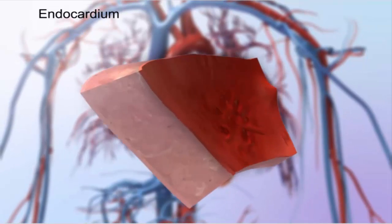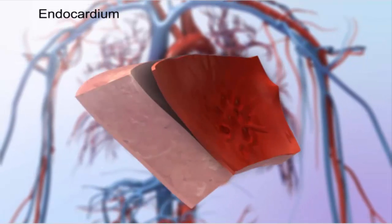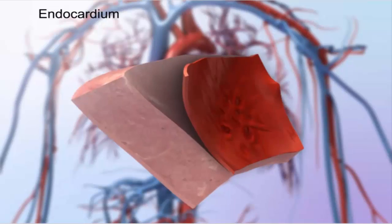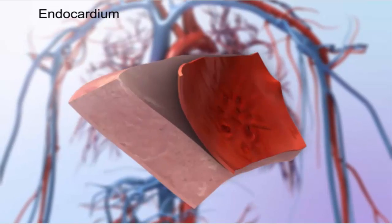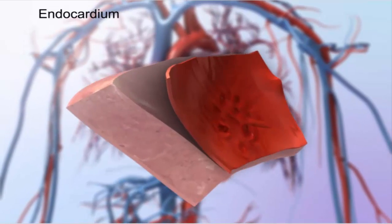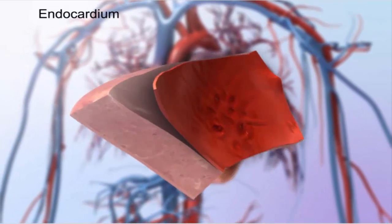Beneath the myocardium lies the endocardium, which forms the innermost layer of the heart wall. The endocardium lines the heart's internal structures and is continuous with the lining of blood vessels that attach to the heart.